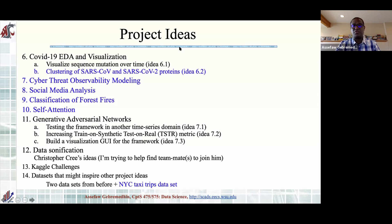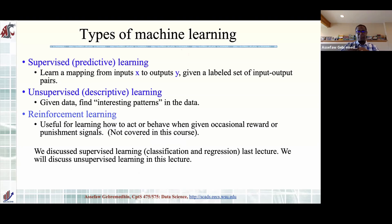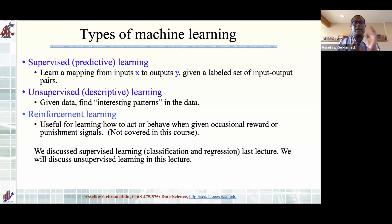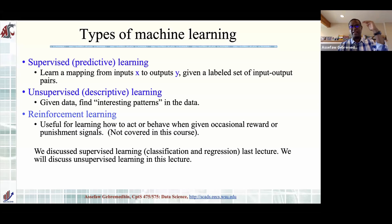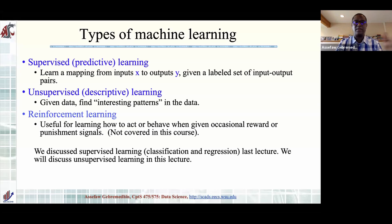Okay, I think you have plenty to choose from. I'm going to pick up on the discussion we started on getting an overview of machine learning. We had identified three categories: supervised learning — where there is a mapping from inputs to outputs with label data; unsupervised learning, also called descriptive learning, which is the topic for today; and reinforcement learning, a third variant we will not discuss in this class.